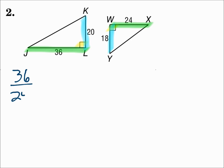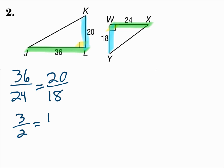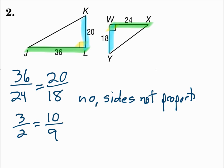36 over 24 for the longer sides equals 20 over 18 for the shorter sides. If those reduce to the same thing, then we have side-angle-side similarity. However, 36 over 24 is 3 halves, and 20 over 18 is 10 ninths. Those are not the same — they're not proportional. Therefore, these triangles are not similar because the sides are not proportional.